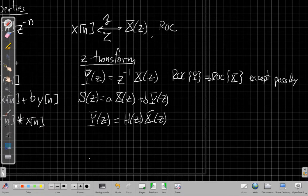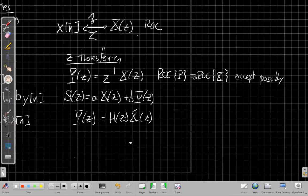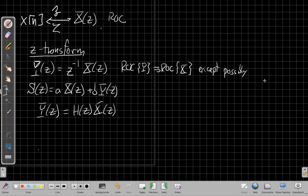So we might be removing, depending on what's already at the origin, we might be removing that from the ROC. And we could, depending on how we do the shifting, we might also make something that wasn't causal causal and take away a pole at infinity, like we talked about in the causal video.